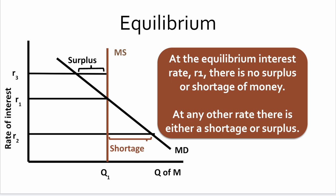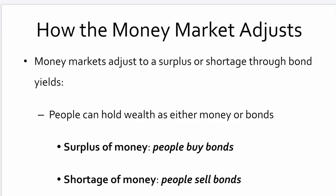So at the equilibrium interest rate R1, there's no surplus or shortage of money. At any rate other than R1, there will either be a shortage — if the market rate is lower — or a surplus — if the market rate is higher. How does the market adjust to move interest rates up or down accordingly?